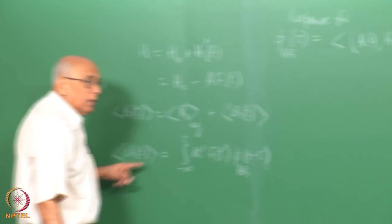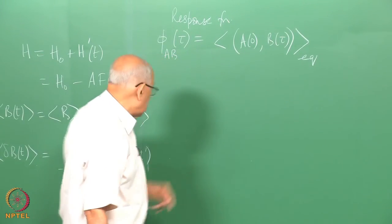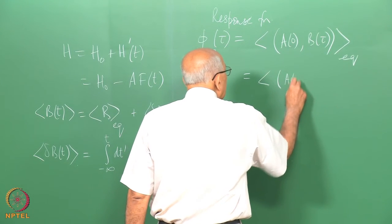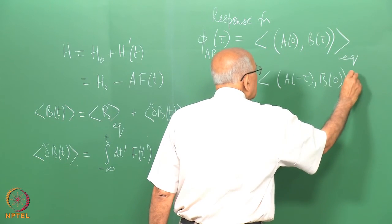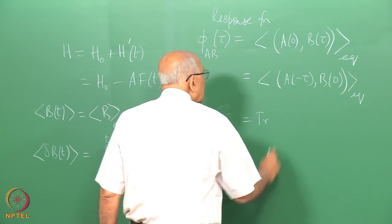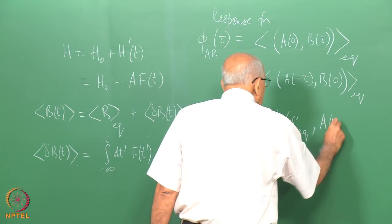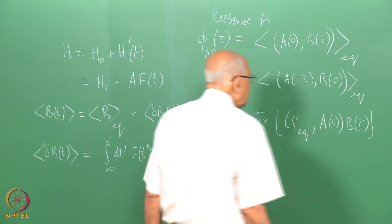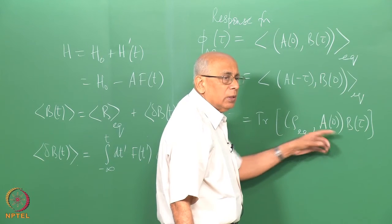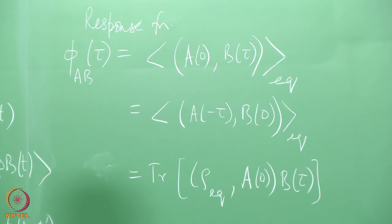The average in the presence of the external force differs from the equilibrium average, which is taken in the absence of the external force. We can write the response function in several equivalent ways: as A(−τ)B(0) in equilibrium, or using the cyclic property of the trace as Tr[ρ_eq · A(0) · B(τ)] or Tr[ρ_eq · A(−τ) · B(0)], providing multiple convenient forms for computation.